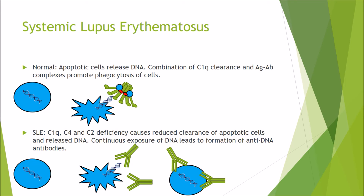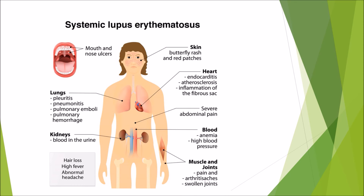Systemic lupus erythematosus (SLE) arises from failure to clear apoptotic cells. Normally, C1q combined with systemic antibodies promotes phagocytosis of apoptotic cells and their released DNA, preventing debris from entering circulation. However, deficiency in C1q, C4, or C2 drastically reduces clearance of apoptotic cells, and prolonged exposure to released DNA leads to formation of anti-DNA antibodies that target nucleated cells throughout the body - hence the term 'systemic'.